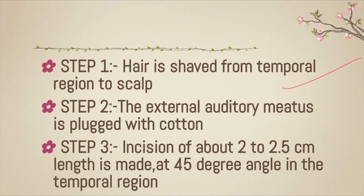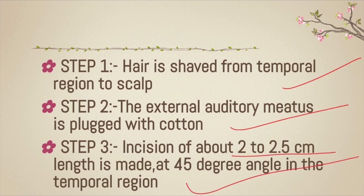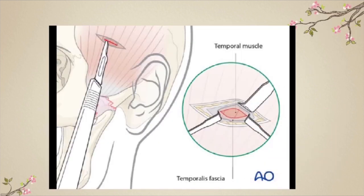Coming to step one: hair is shaved from the temporal region to the scalp. Step two: the external auditory meatus is plugged with cotton to prevent blood or fluid from entering. Step three: an incision of about 2 to 2.5 cm length is made at a 45-degree angle in the temporal region, placed between the anterior and posterior branches of the superficial temporal artery to avoid damaging them.